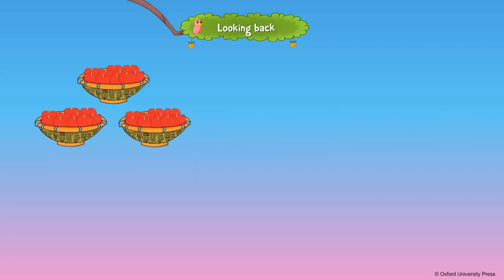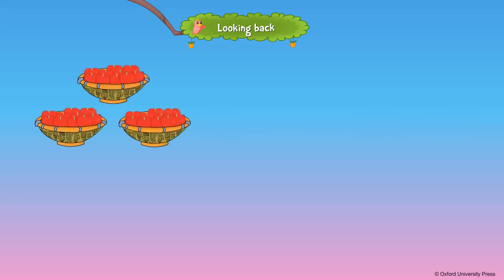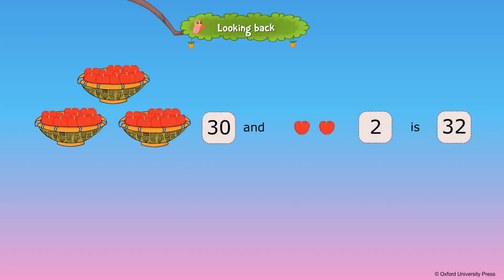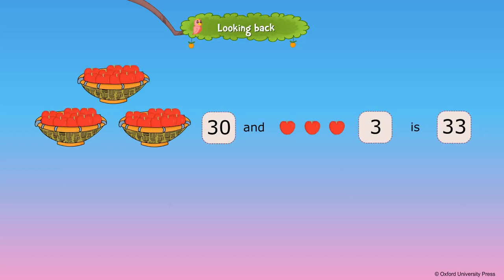Each basket has 10 apples. If two more apples are added, we will have 32 apples. 30 and 2 is 32. If three more apples are added, we will have 33 apples. 30 and 3 is 33.